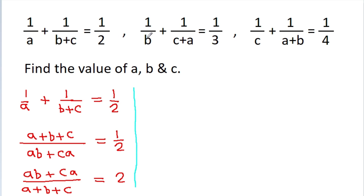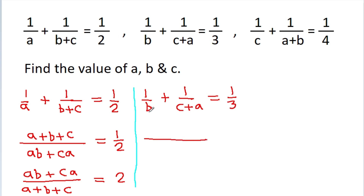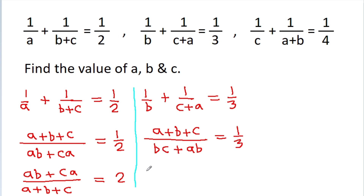The second equation is 1 by b minus 1 by c plus a is equal to 1 by 3. Now b times c plus a gives bc plus ab, and c plus a plus b gives a plus b plus c, so bc plus ab by a plus b plus c is equal to 3.